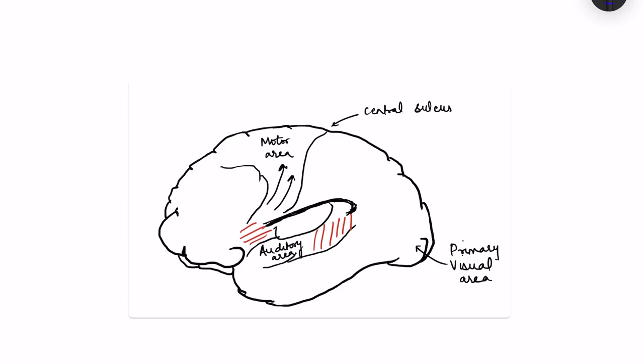Speech is a complicated process which is brought about by interaction of different areas in the brain. So how do we actually communicate? We can communicate by expressing our thoughts in terms of language, that is by speaking, and we can also express by writing and also by sign language, using hand gestures as well.